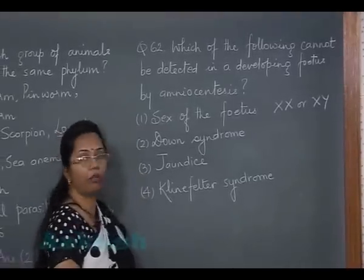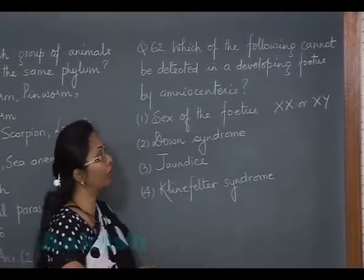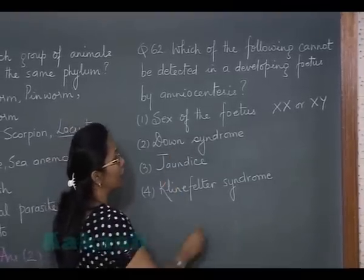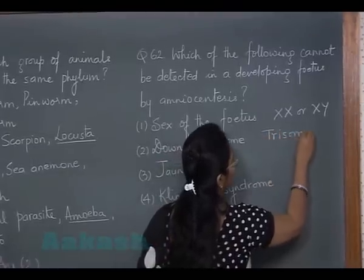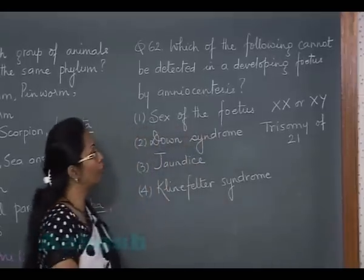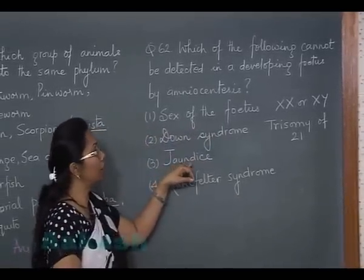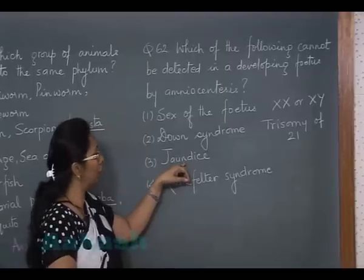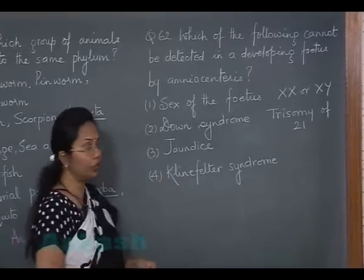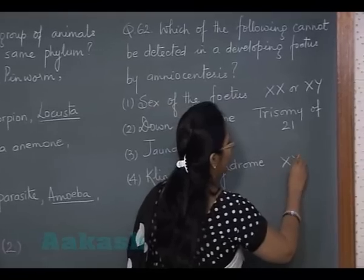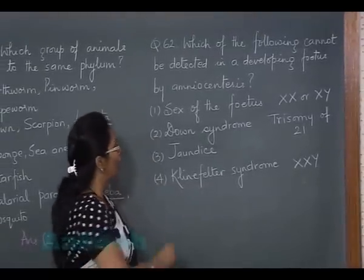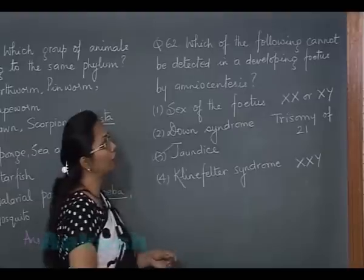This test has been banned in our country because it was used to determine the sex of the fetus. Down syndrome is trisomy of chromosome 21, meaning the 21st chromosome has three copies — this can be detected. Jaundice, however, is not reflected in the DNA of the cell, so it cannot be found by amniocentesis. Klinefelter syndrome is XXY condition — the child has 47 chromosomes with two X and one Y.